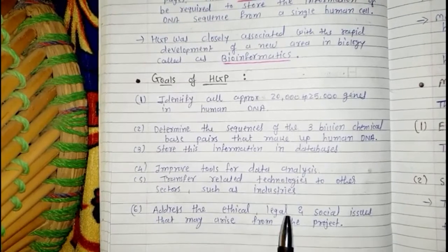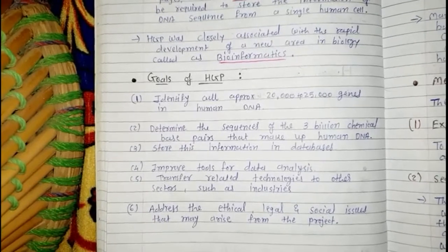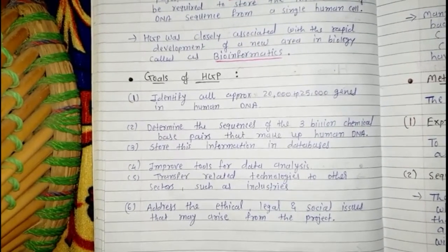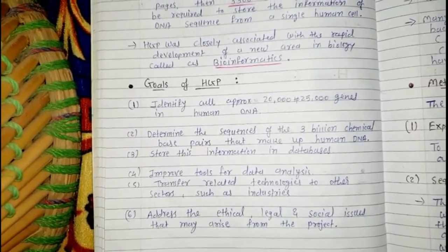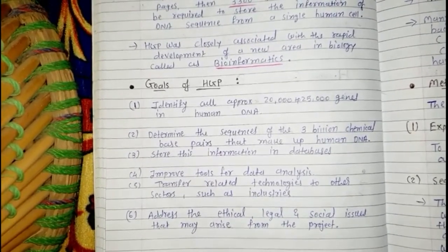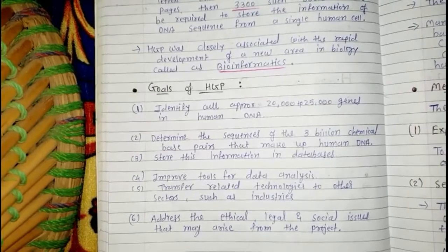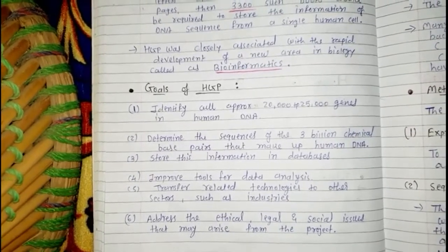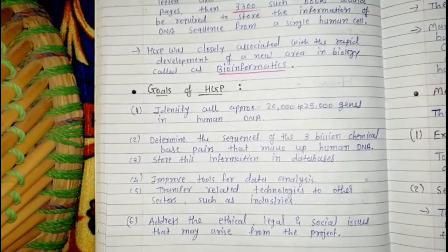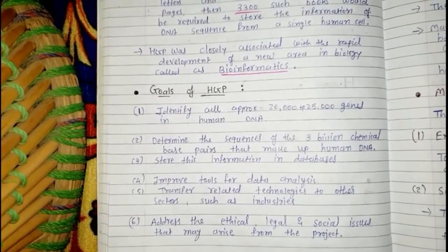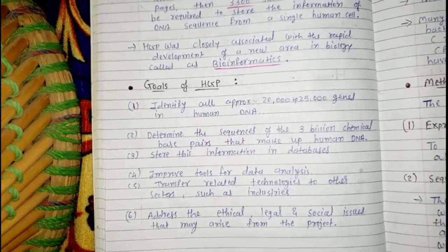The sixth goal was to address the ethical, legal, and social issues that may arise from the project. Scientists had to ensure that no harm was caused — no animal or human suffering, no environmental pollution, nothing illegal, and nothing outside the bounds of ethics. Animal models were used for experiments on human DNA sequencing, and all these considerations had to be maintained throughout the project.